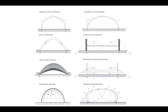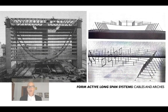There are four ways we can use shapes to resist loads, particularly spanning loads. Section resistant structures are basically beams, where we use the depth of an element to carry the load. Form resistant structures are usually cables and arches. Vector resistant structures involve triangulating a shape into a truss. And surface resistant structures — which we haven't talked about much yet — are the more complicated and exciting territory we'll get into in a couple of weeks.